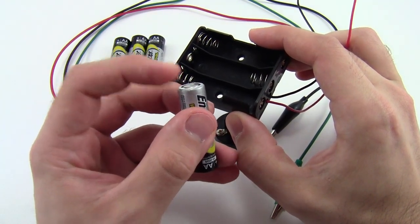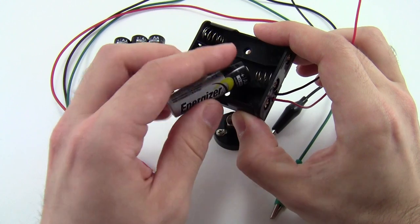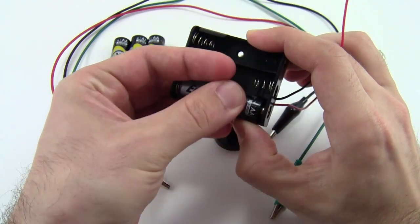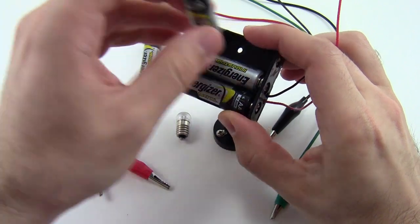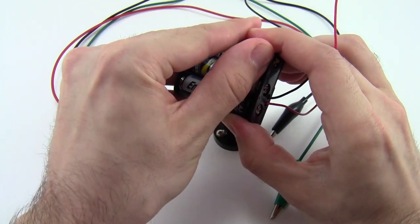You can also check that the flat end of the battery is the side that goes up against the spring. So put three batteries in the battery holder, and then put the fourth battery aside.